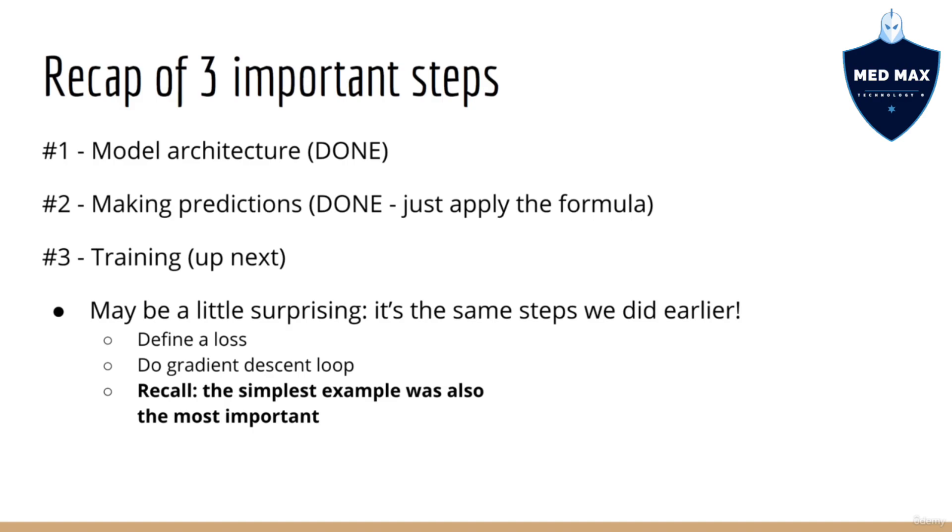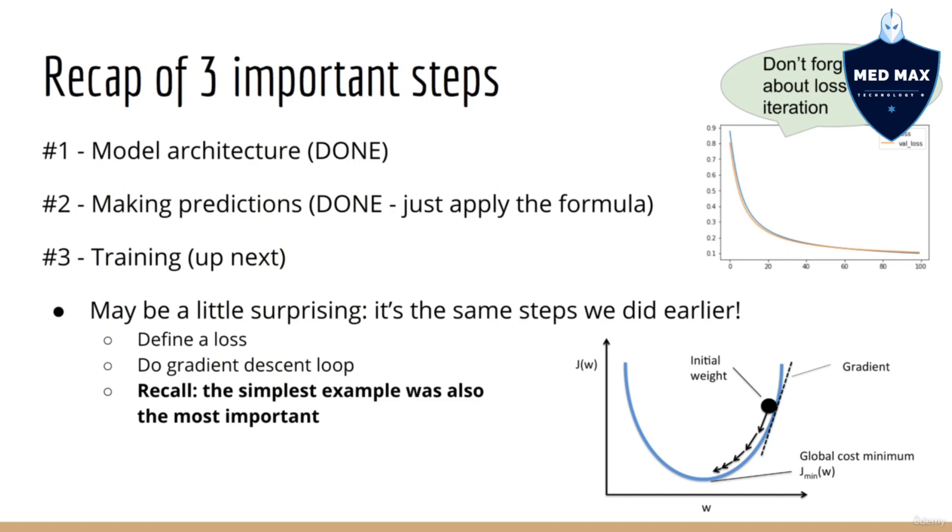As I promised earlier, we are going to follow the exact same general steps as we did when we learned about linear regression. It may surprise you, but these are the same steps that we are going to follow for every subsequent example in this course. That's why I said it's the simplest example, but it was also the most important. Now you see why. So as you recall, we need to define a loss function. Then, after we've done that, all we need to do is apply the gradient descent procedure to update the parameters of the model in order to minimize that loss. Once we've completed training, we can plot the loss per iteration to ensure that the loss converts successfully, and we can test our model by checking its accuracy on the train and test sets.